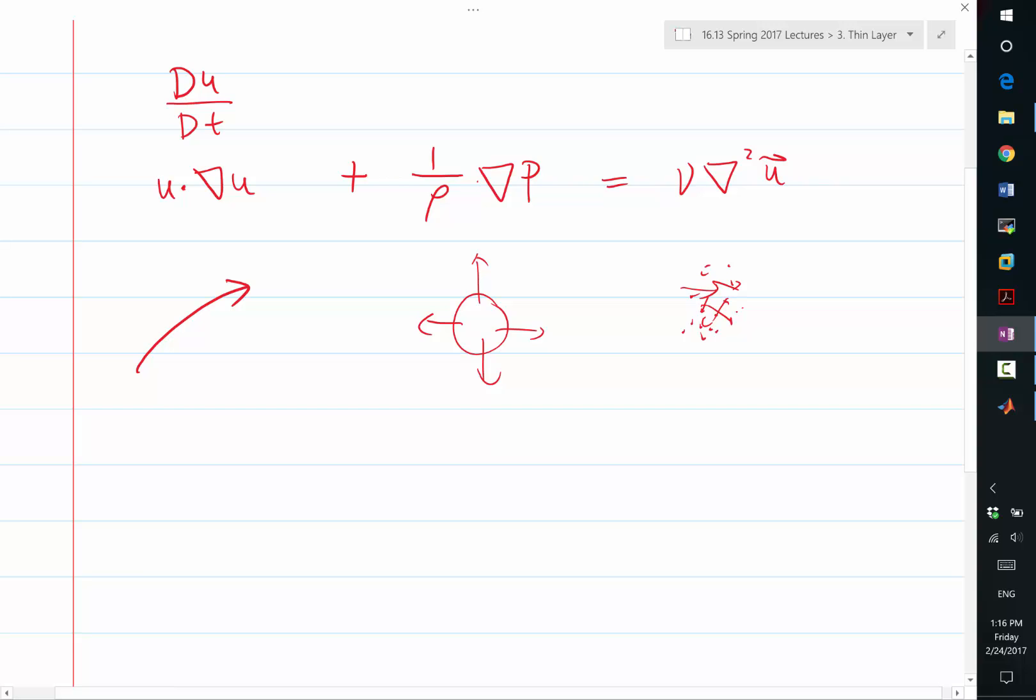It's a local effect while the pressure is a global effect. It's isotropic global effect. And the convection is a very directional, also local effect.